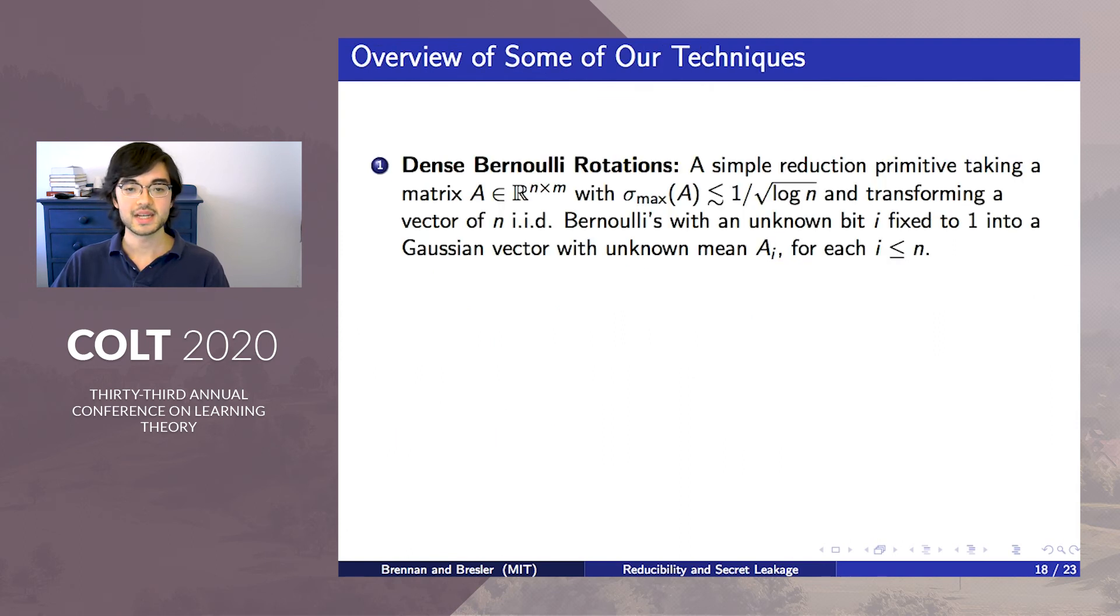The technique that makes its way into most of our reductions is what we call dense Bernoulli rotations. This is crucial in our reductions to robust sparse mean estimation, dense stochastic block models, hidden partition models, semi-random planted dense subgraph, and tensor PCA. It also indirectly appears in all of our other reductions.